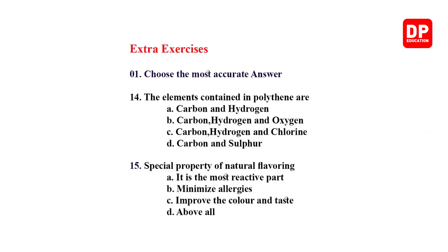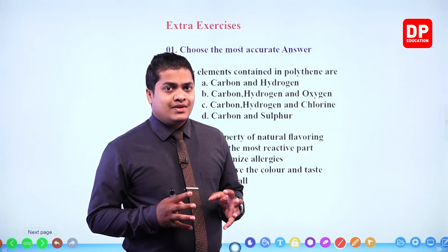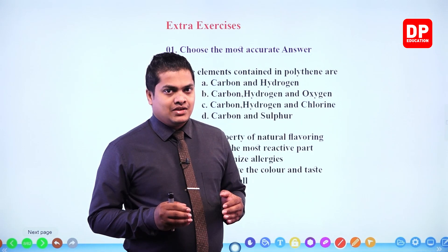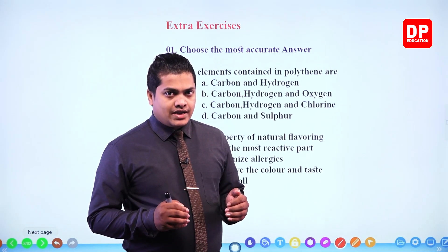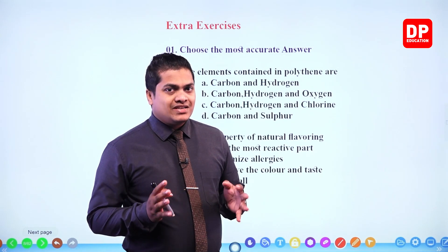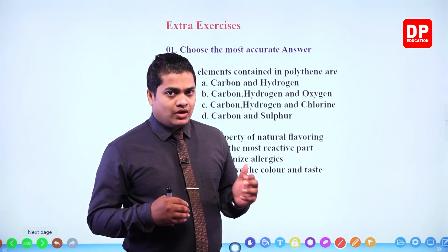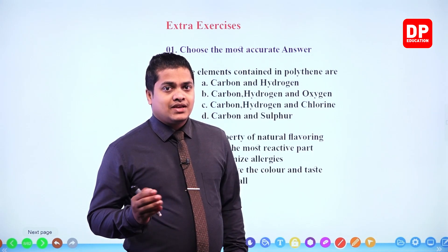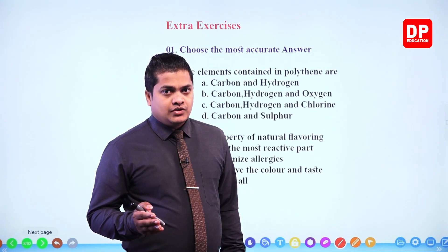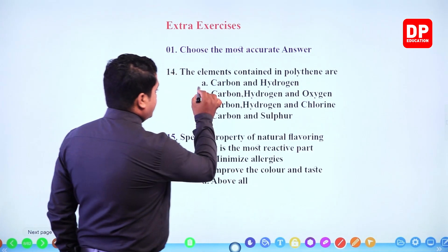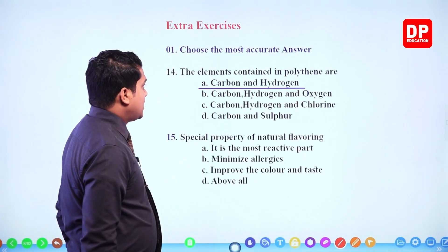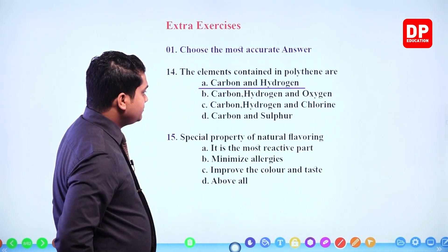Next: the elements contained in polythene. Polythene is made by polymerization of ethene; ethene contains hydrogen and carbon mainly. That is why when burning polythene, special gases like dioxin can emit. So our answer should be carbon and hydrogen.